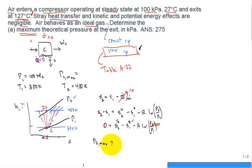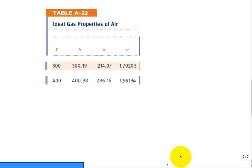So P2 max would be equal to P1 times the exponential of the S2 naught minus S1 naught divided by R. So how do I get the S2s and S1s? We go to table A22, and this would be T1 right there. And so this right here is S naught at one. And this is S naught at two.